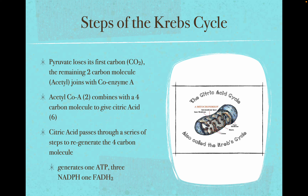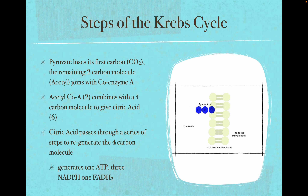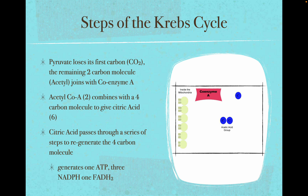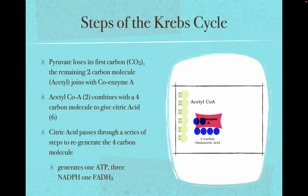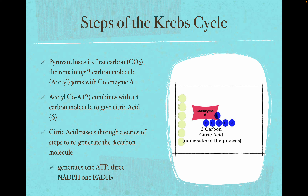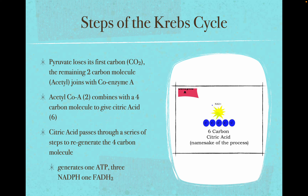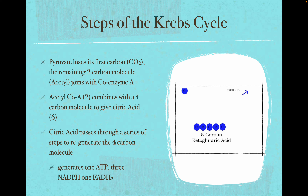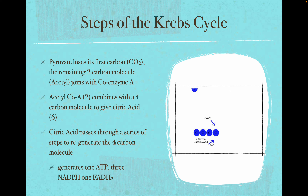In the process, you do generate one ATP, but mostly what you get are charged coenzymes NADH and FADH2. Animating the cycle: pyruvic acid loses a carbon dioxide, going from three carbons to two. The two-carbon acetyl group is picked up by coenzyme A, which combines it with four-carbon oxaloacetic acid to give six-carbon citric acid. Citric acid loses a carbon dioxide to become ketoglutaric acid, then loses another carbon dioxide to become succinic acid, and succinic acid is rearranged back into oxaloacetic acid.